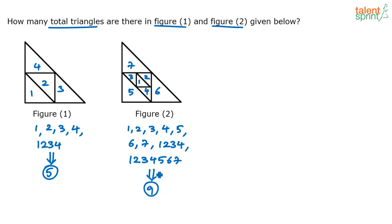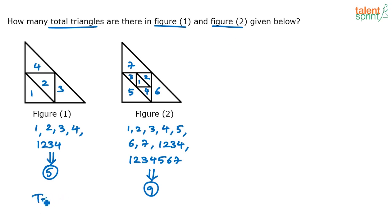I've put numbers there so it becomes easy to understand which triangle I'm referring to. When I say 1, 2, 3, 4, I mean a combination of those parts. When I say 1 through 7, I'm referring to the whole big triangle. So 5 plus 9 gives 14 triangles total.